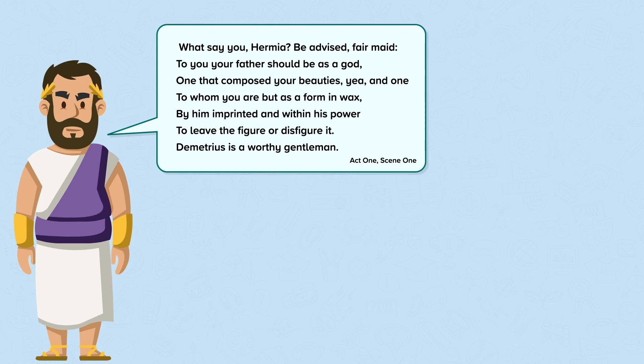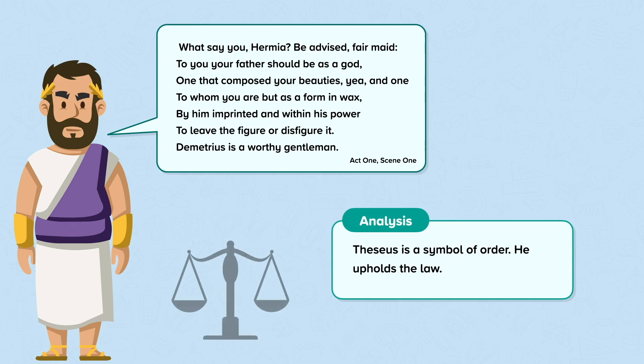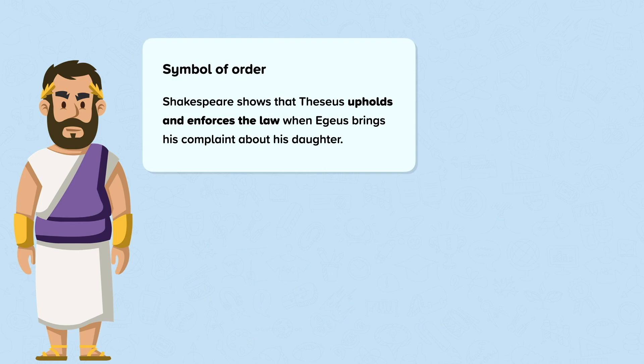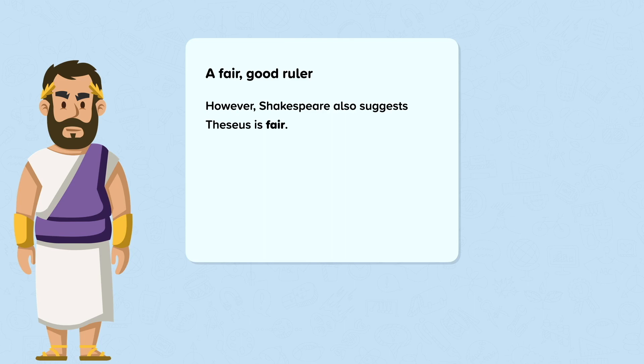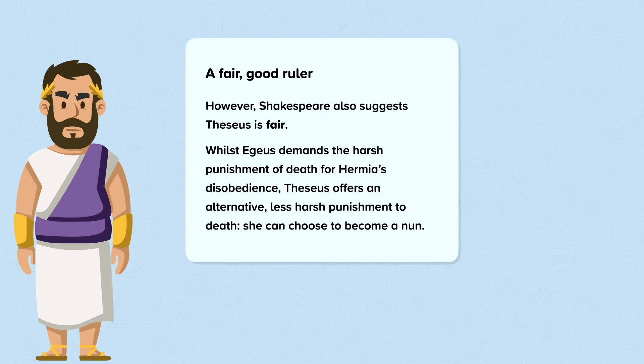Theseus points out that Demetrius is a good man and would make a good husband. We see that Theseus is a symbol of order and he upholds the law. Shakespeare shows that Theseus upholds and enforces the law when Aegeus brings his complaint about his daughter. However, Shakespeare also suggests that Theseus is fair, showing that he is a fair and good ruler.